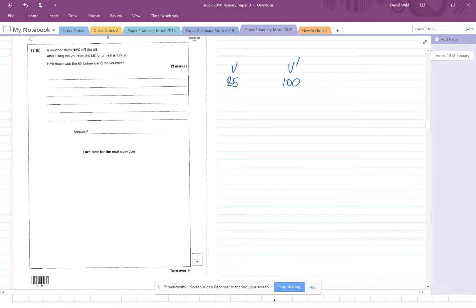Now, after using the voucher, we use the voucher, which is this one, we know that this is £27.20. So we just put them in the correct columns. And what we're trying to work out is how much was the bill before using the voucher. So this is this value here, X. This is the bill. This is the money. So here's the percentages across here, and this is the money across here. So we're in ratios.